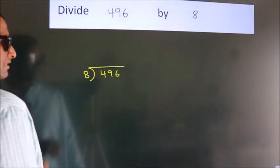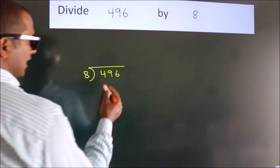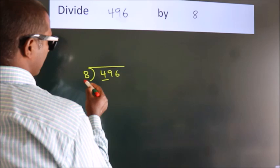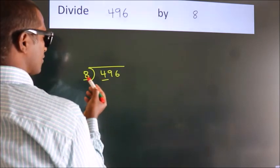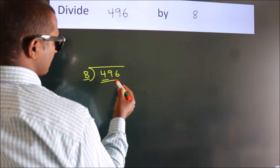This is step 1. Next, here we have 4, here 8. 4 is smaller than 8, so we should take two numbers: 49.